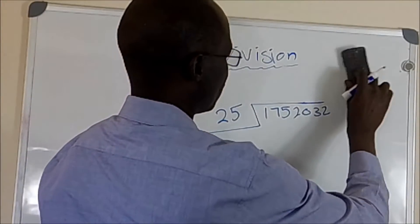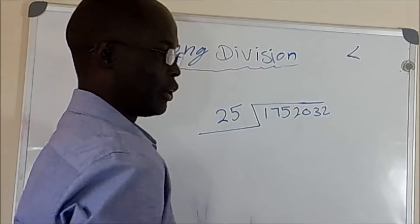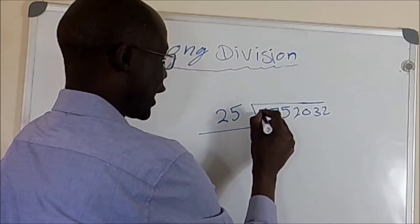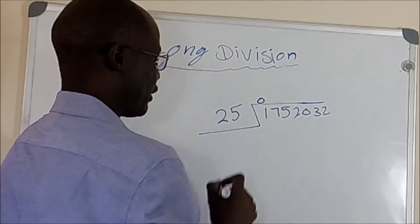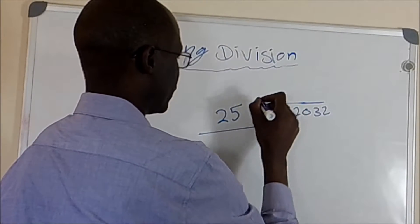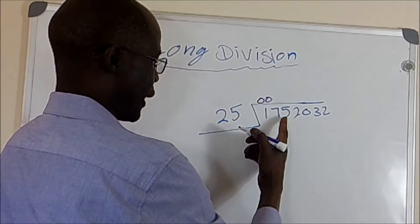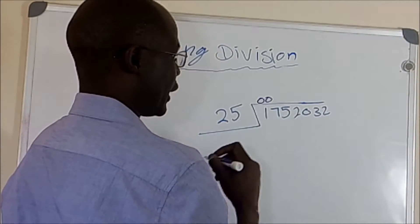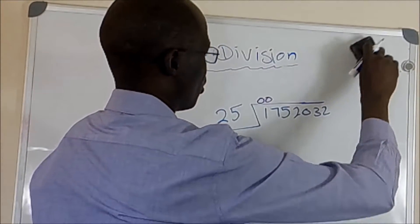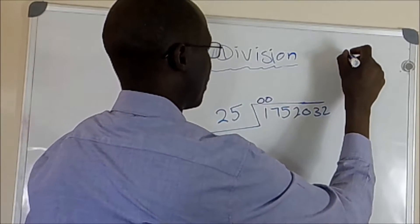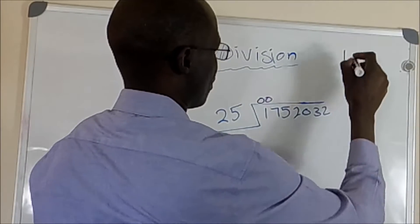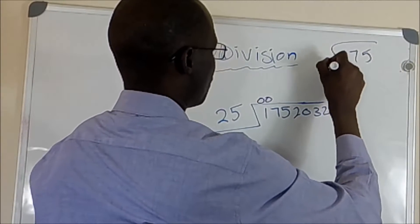We try 1 divided by 25, it's less than 25, we put zero. 7 divided by 25 is less, so we put zero. But when we get to 5, we have 175. So that means we have 175 divided by 25.